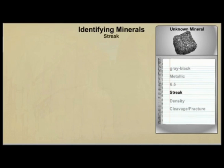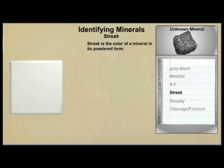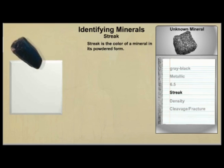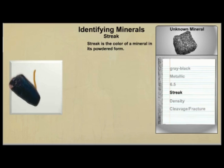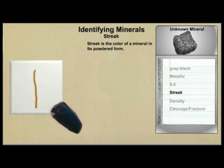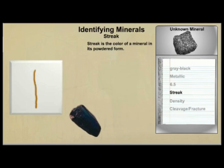Mineral streak. Streak is the color of a mineral in its powdered form. A streak test is usually carried out by scraping the mineral across an unglazed porcelain plate. The streak color of a mineral is not necessarily the same as its surface color.